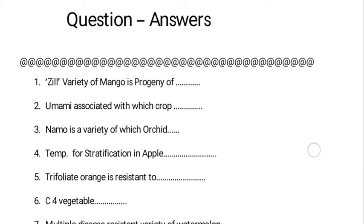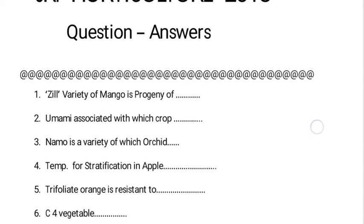Trifoliate orange — many questions are asked from this topic. Trifoliate orange is cold-hardy and drought-tolerant, used as a rootstock in citrus. Scientifically, trifoliate orange is Poncirus trifoliata. Generally, all citrus are deciduous in nature, but trifoliate orange is evergreen in nature. Flying Dragon and Chithali are varieties of trifoliate orange.